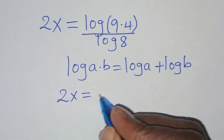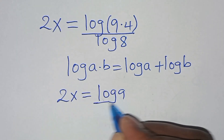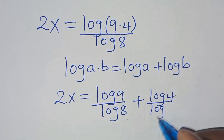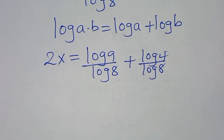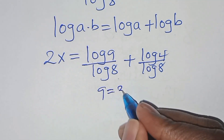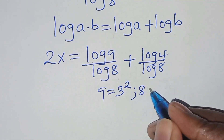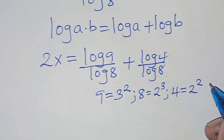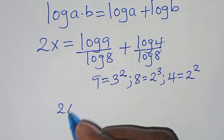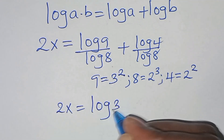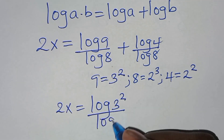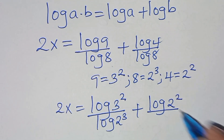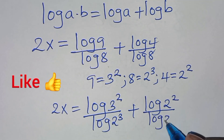So we have 2x equal to log 9 divided by log 8, plus log 4 divided by log 8. Now we can express 9 as 3 squared, 8 as 2 cubed, and 4 as 2 squared. Therefore, 2x equals log(3²) divided by log(2³), plus log(2²) divided by log(2³).